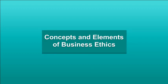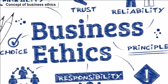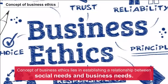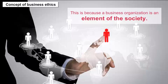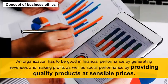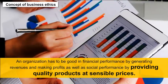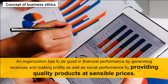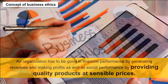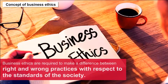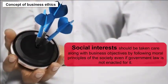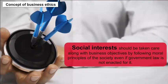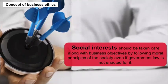Concepts and Elements of Business Ethics: The concept of business ethics lies in establishing a relationship between social needs and business needs, because a business organization is an element of society. An organization has to perform well both financially — by generating revenues and making profits — and socially — by providing quality products at sensible prices. Business ethics are required to make a difference between right and wrong practices with respect to the standards of society. Social interests should be taken care of along with business objectives by following moral principles of society, even if government law is not enacted for it.